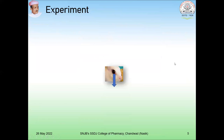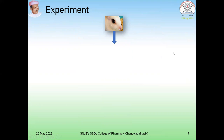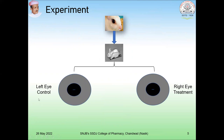In this experiment, you take a male or female rabbit and hold it in a rabbit cage. Consider the left eye as a control, which will not be treated with any drug, whereas the right eye is considered the treatment eye. Rabbit is selected because its eye is prominent and you can visually observe changes in pupil size, which is impossible with rats or mice. Always compare the reaction of the pupil to the left eye.